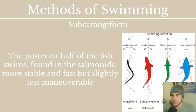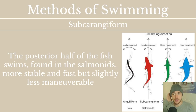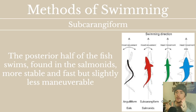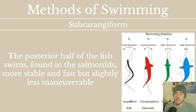The next method is subcarangiform, found in salmonids. It's more stable and a little bit faster, but losing some maneuverability — though it's still at the high end of the maneuverability scale. The posterior half of the fish does the swimming — essentially from the middle to the very back. So they're a little bit less maneuverable but a little faster and a little more stable, though still not very stable or very fast.